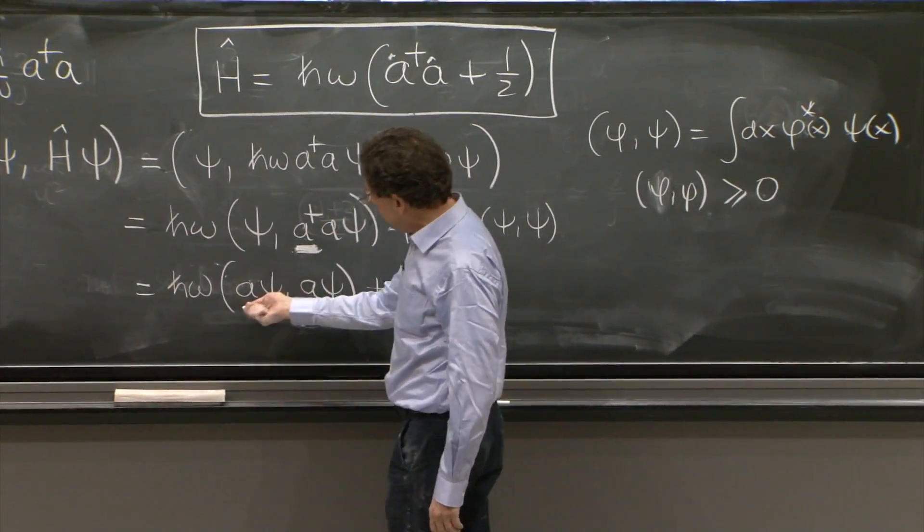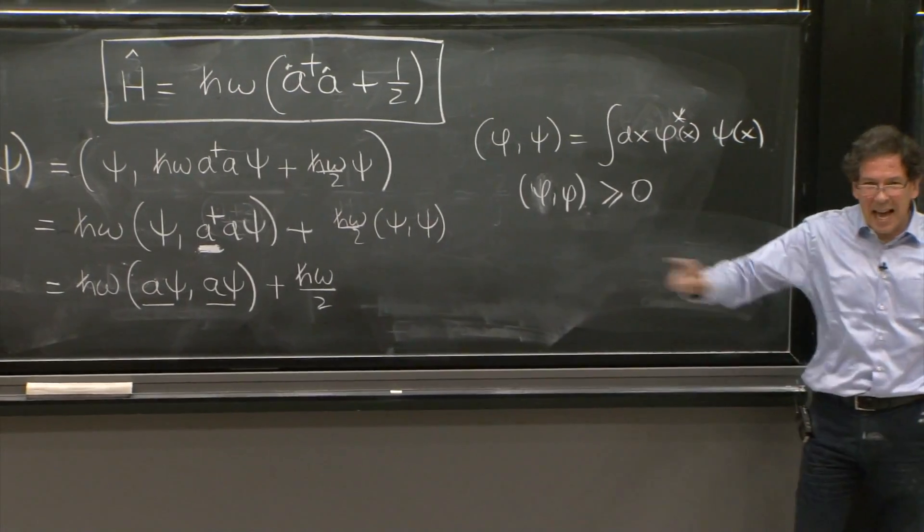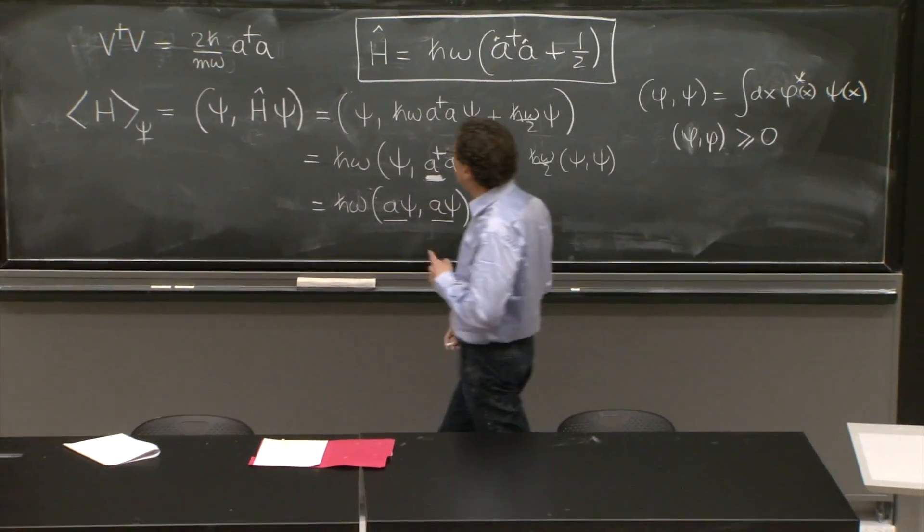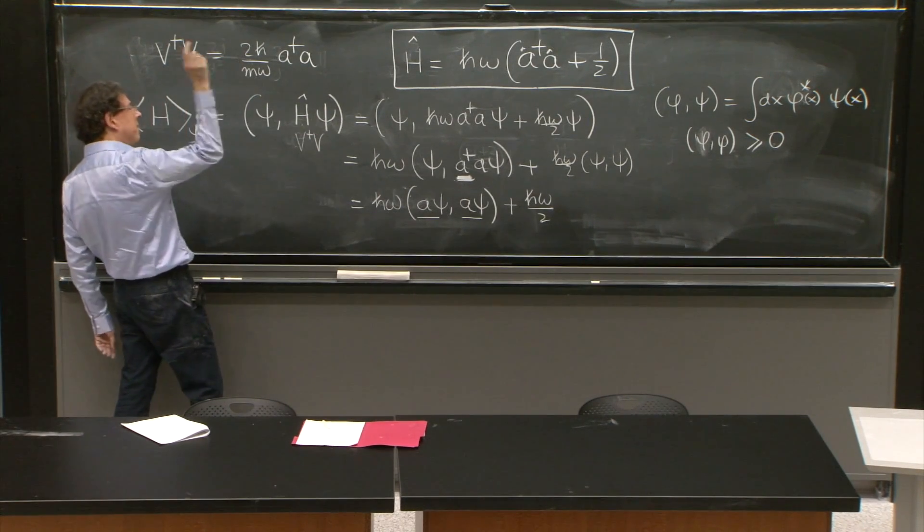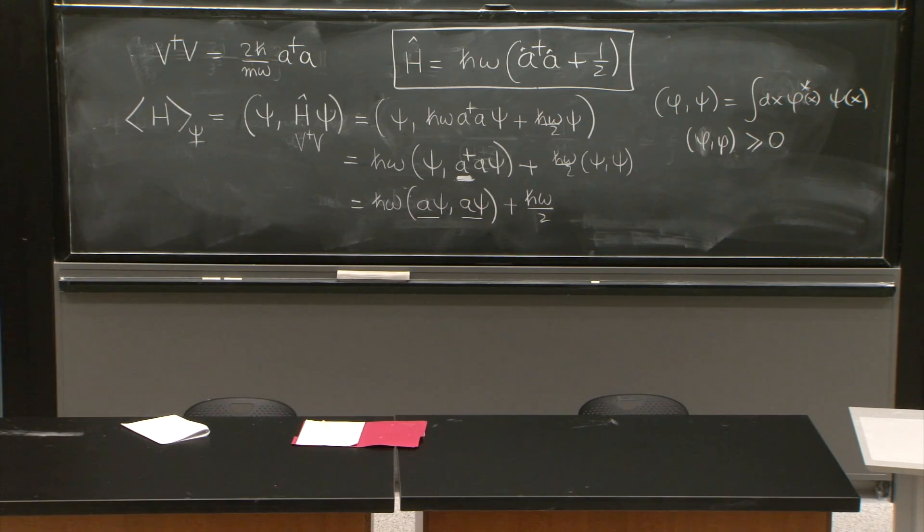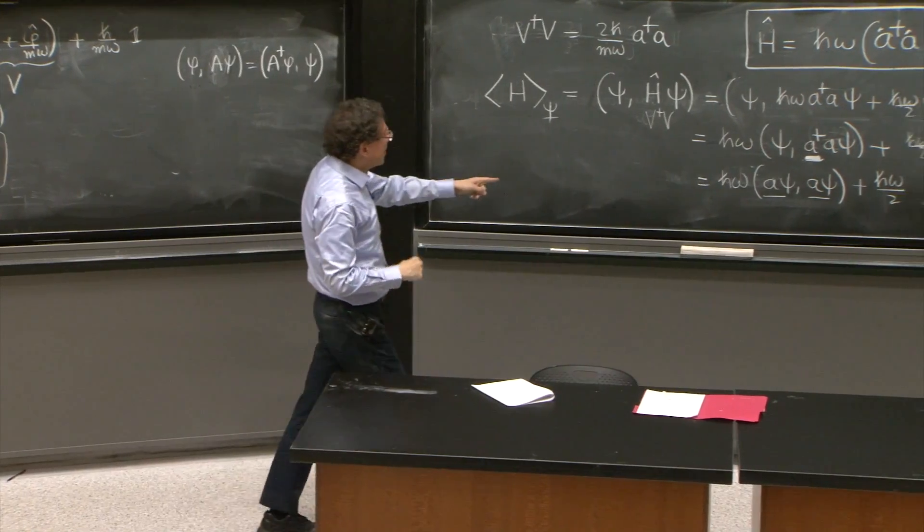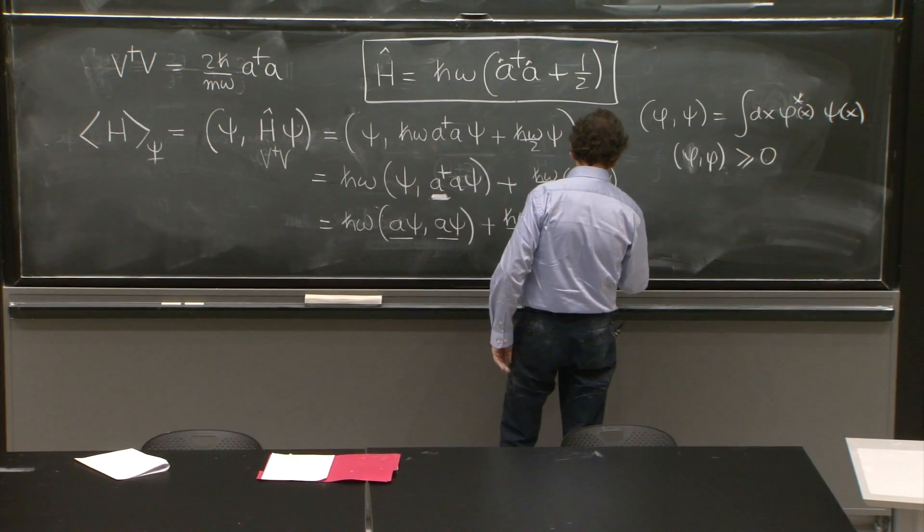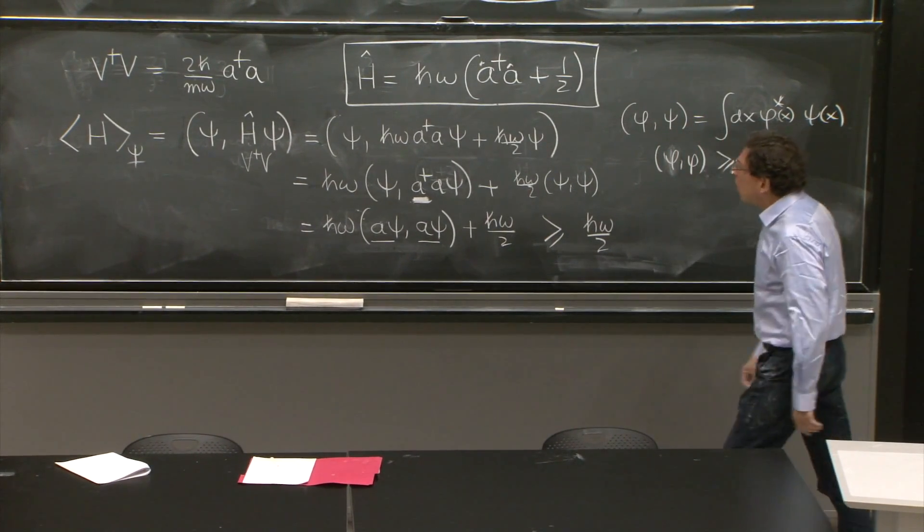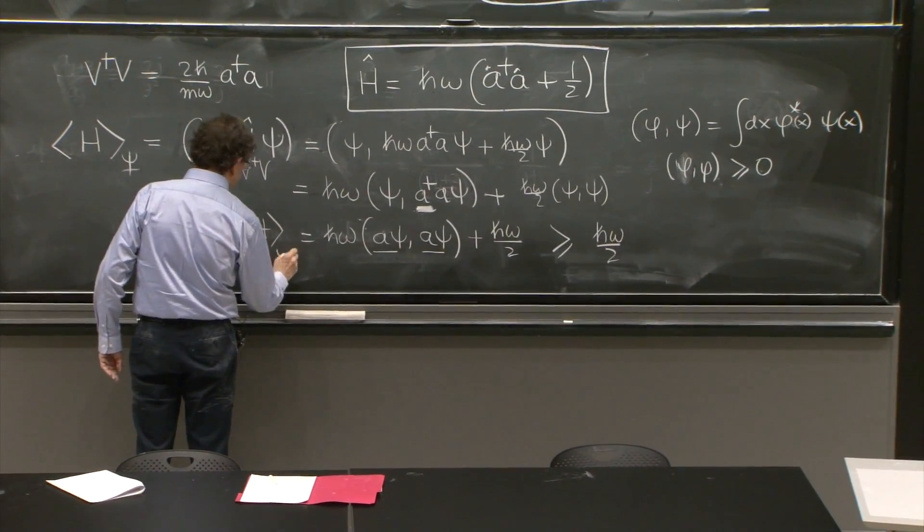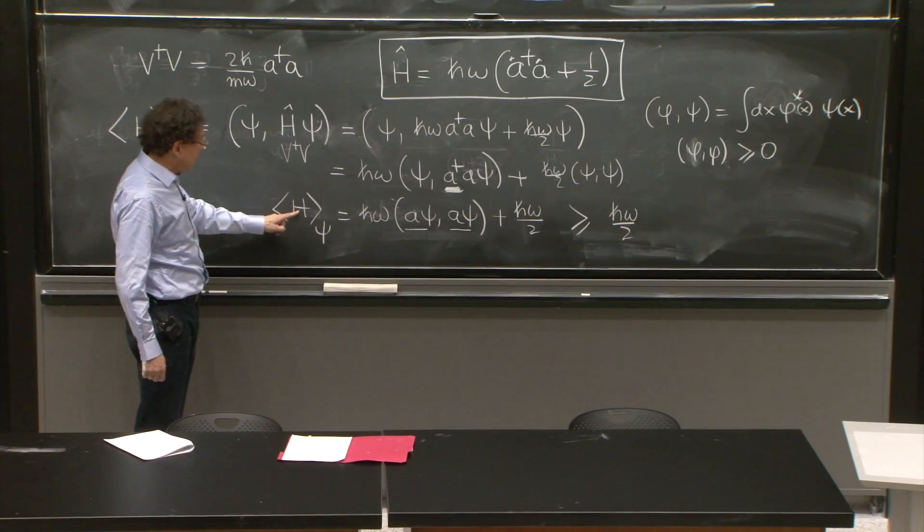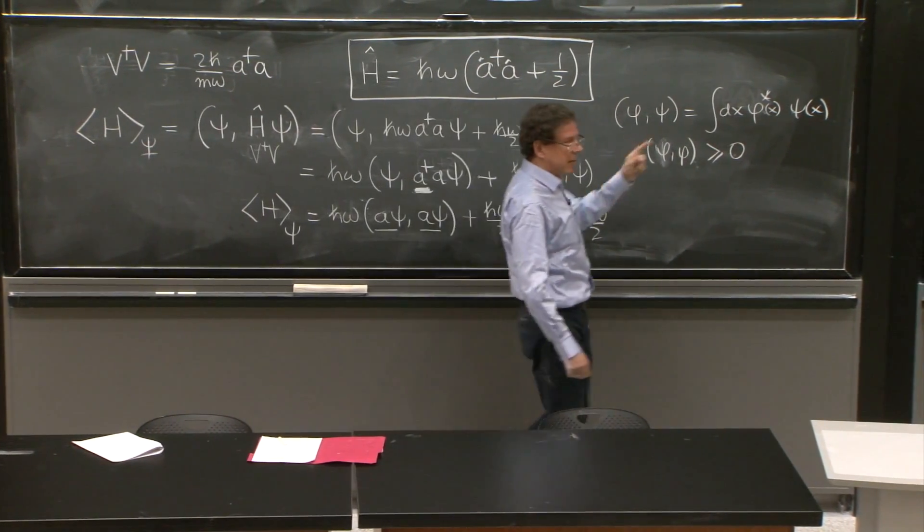Look, here you have some function, but here the same function. It is this case. That thing is greater or equal than 0. That is the great benefit of the factorized Hamiltonian. If H has a v dagger v, you can flip the v dagger here and it becomes v psi, v psi. And it's positive. And you've learned something very important—you can get positive energies. In fact, from here, since this is positive, this must be greater or equal than h omega over 2 because this is greater than or equal to 0. So the expectation value of the Hamiltonian, if you would be thinking now of energy eigenstates, the energy eigenvalue is the expectation value of the Hamiltonian in an energy eigenstate must be greater than h bar omega over 2.